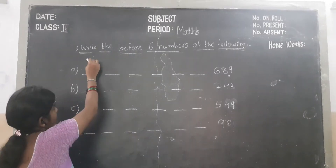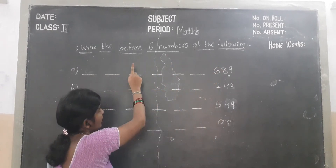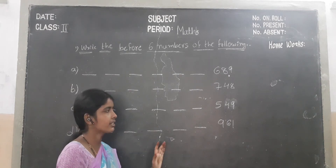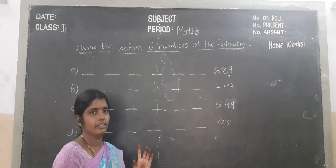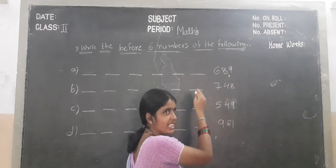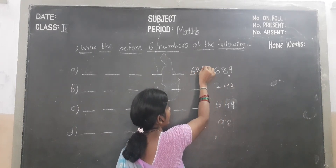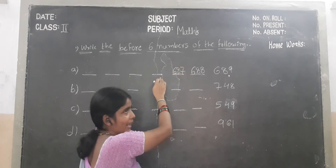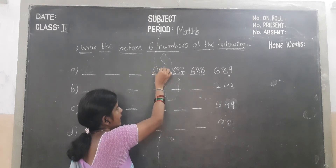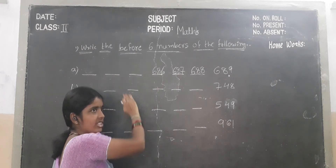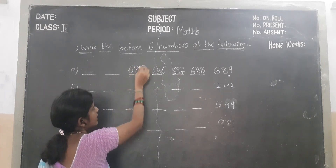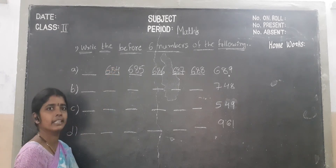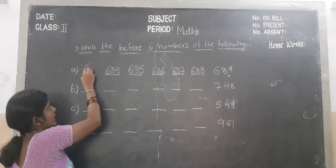Children, write the before 6 numbers of the following. In the previous classes we added the number. In this exercise we subtract the number — we subtract 1. Children, 689. We subtract 1 — which number will become? 688. We subtract minus 1 — which number will become? 687. We subtract minus 1 — 686. We subtract minus 1 — 685. We subtract minus 1 — 684. We subtract minus 1 — 683.